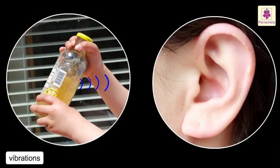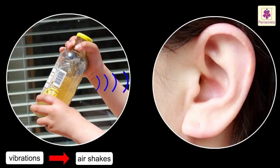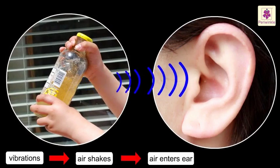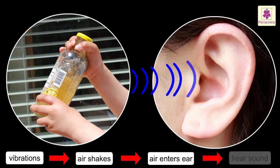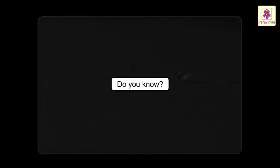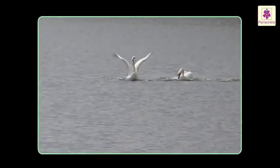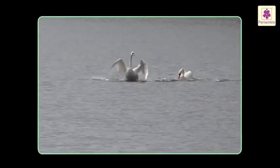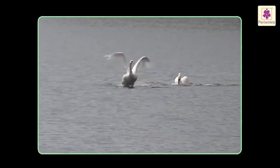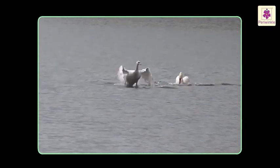The vibrations make the air shake and the shaking air enters our ears, which we hear as a sound. When a bird flaps its wings, the air around it moves, which we hear as sound.